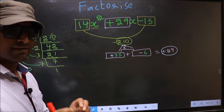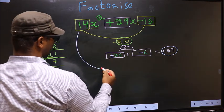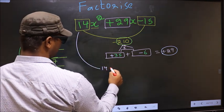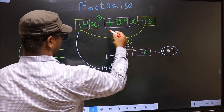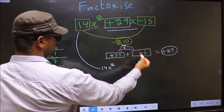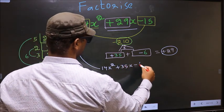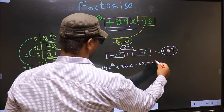Now you change this to 14x². In place of +29x, now we should write this: +35x - 6x - 15.